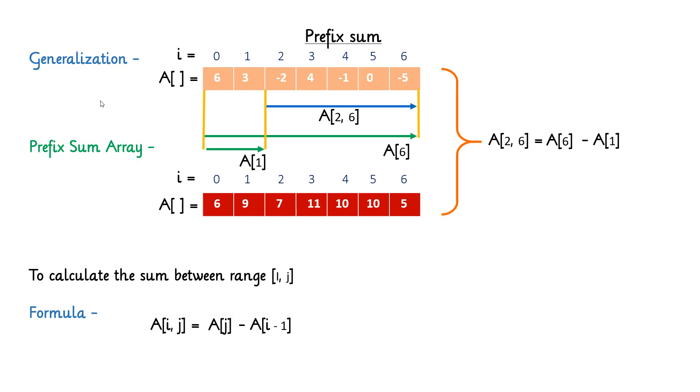So now you can use this formula to calculate any range sum query. Let's try. Can you calculate the sum between range 3 to 5 now? After applying this formula, you can easily calculate this. So the answer will be 3 and the complexity to calculate the sum will be O(1) which is constant.